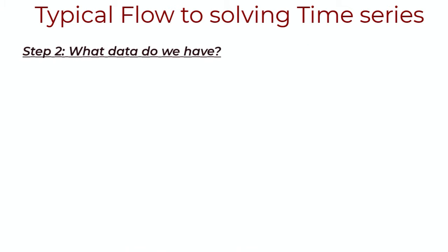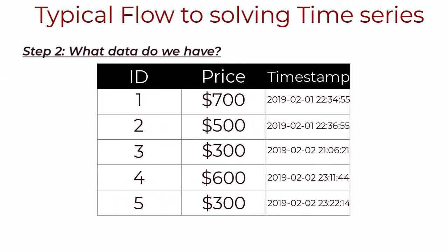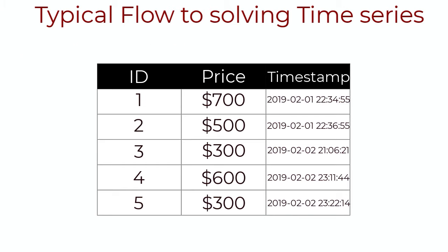So step two: what data do we have? Let's say that we store every work order in an orders table. When a customer makes an order request online, a row in the orders table is added. This table has information like order ID, the price, and the timestamp when the order was made. For simplicity, let's say there are no log errors, no missing values, and no sparse data.